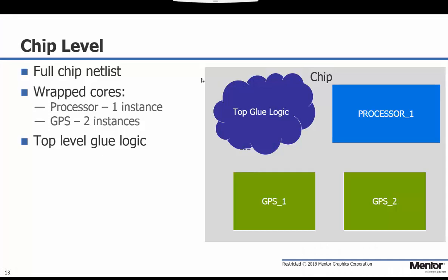First, a brief description of the SOC design we'll be looking at. The full chip netlist consists of three wrapped core instances and some top-level glue logic. One instance is the processor core shown in the second video of this series, and then there are two instances of a GPS core.